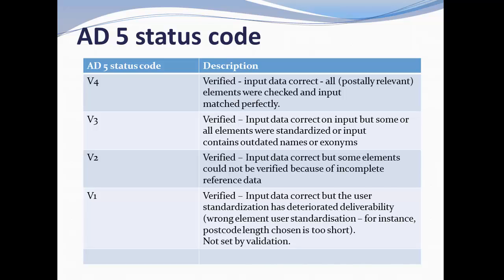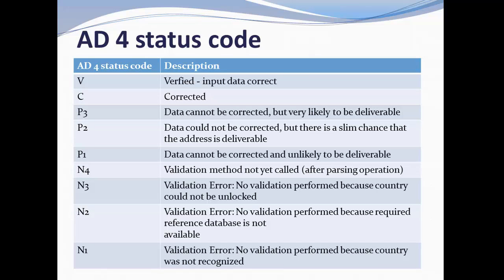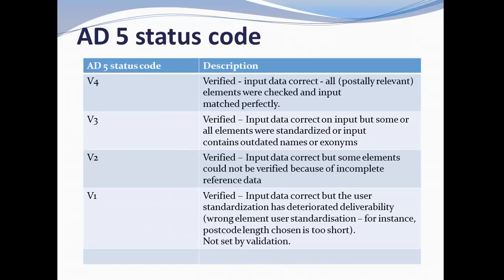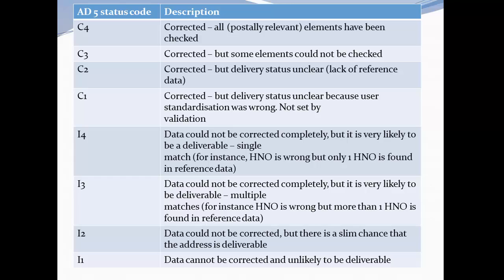In Address Doctor version 5, for verified address, instead of just 'V' as in version 4, we have V1, V2, V3, and V4. V4 means the input data is absolutely correct. In practice, V3 or V2 are more commonly encountered — even for correct addresses — but those are still appropriate, meaning the mail can be delivered to that address. On the same line, we have C1, C2, C3 for corrected addresses, meaning Address Doctor itself corrected the given address to make it appropriate.